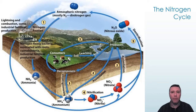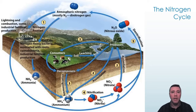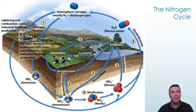Nitrogen gas, however, cannot directly be used by living things. It first must be converted into a usable ionic form, like ammonium ions or nitrate ions. This process, called nitrogen fixation, is primarily the responsibility of only two kinds of bacteria, collectively called nitrogen-fixing bacteria. Once the nitrogen is in a usable form, it can be taken up into plants through their roots, whereby plants then incorporate the nitrogen into amino acids and nucleotides.